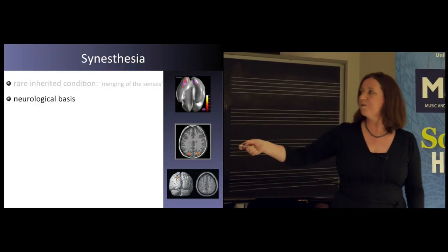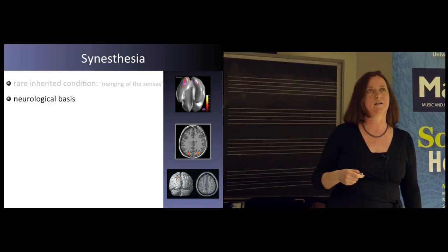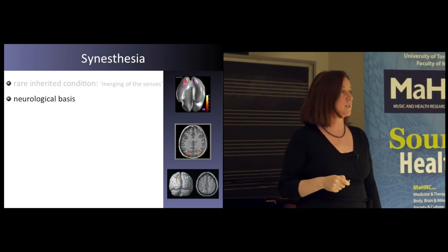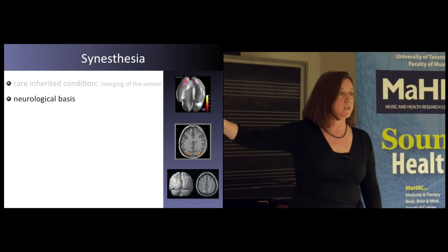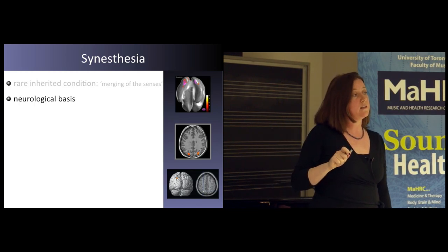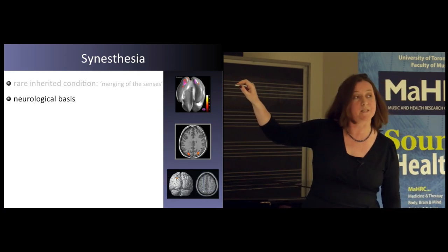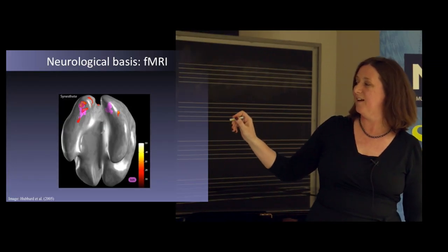Synesthetic brains are very slightly different from the average person. I'll show you this now — the neurological basis of synesthesia. What you're seeing here is the brain of about 10 synesthetes merged into one. They all have grapheme-colour synesthesia, coloured letters and digits. At the moment this image was taken, they were in the scanner looking at black and white letters. Looking at the underside of the brain — back to front — I want to point out these two areas in pink, painted in Photoshop to show where the colour region of the brain is.